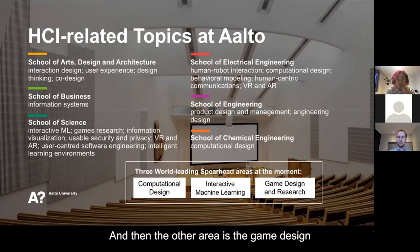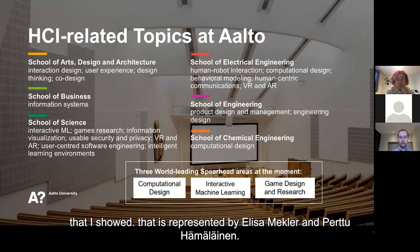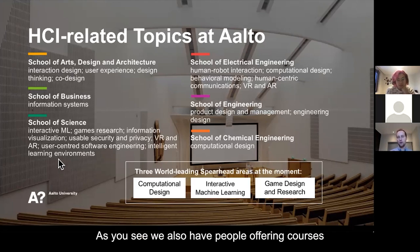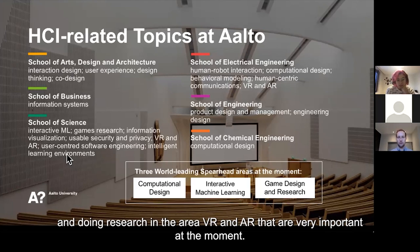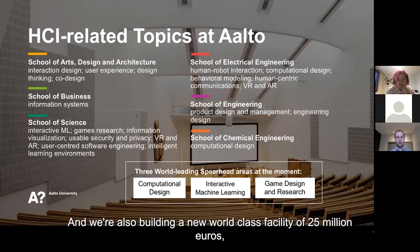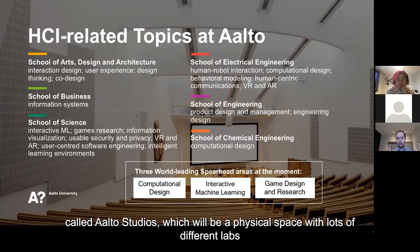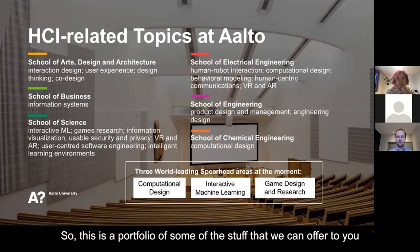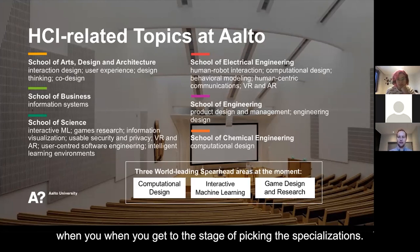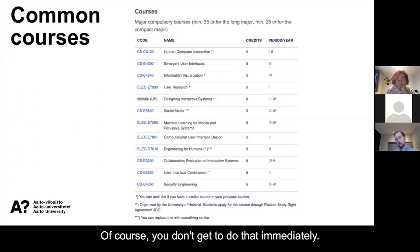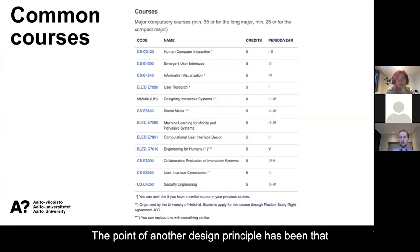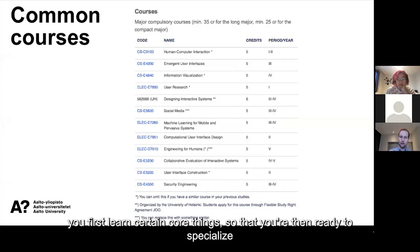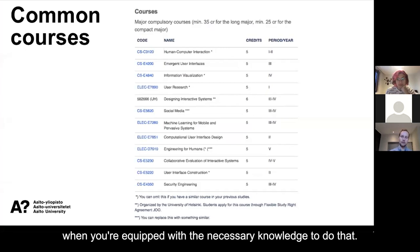We also have people offering courses and doing research in VR and AR, which are very important at the moment. We're also building a new world-class facility of 25 million euros called Aalto Studios — a physical space with lots of different labs equipped with state-of-the-art VR and AR equipment. This is a portfolio of some of the stuff we can offer you when you get to the stage of picking specializations. Of course, you don't get to do that immediately — you first learn certain core things so you're ready to specialize with the necessary knowledge.